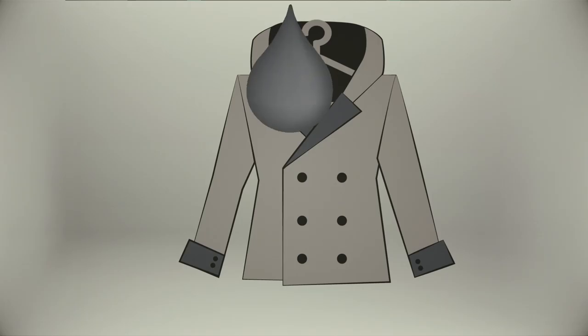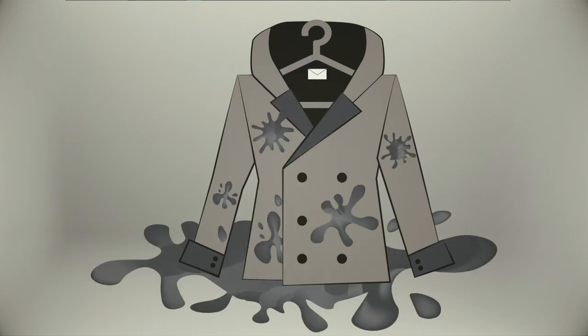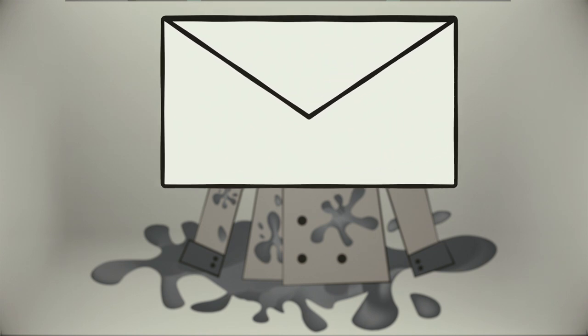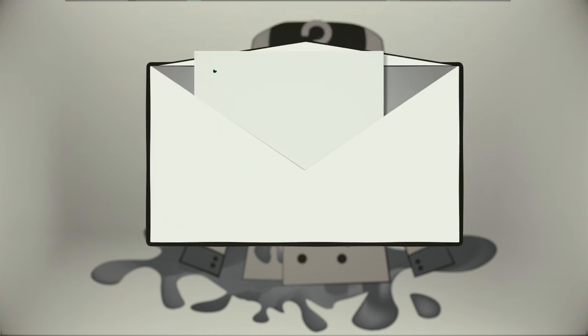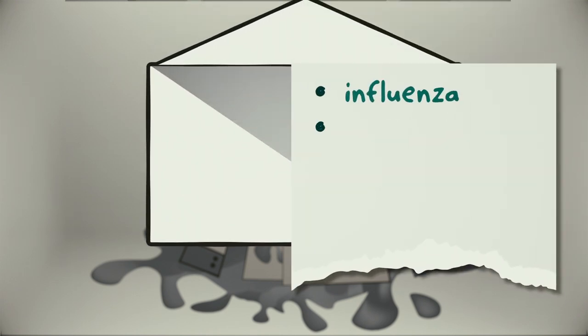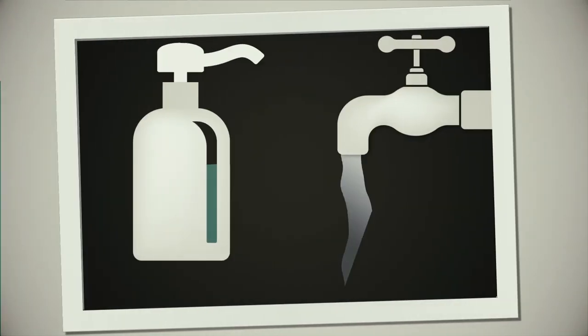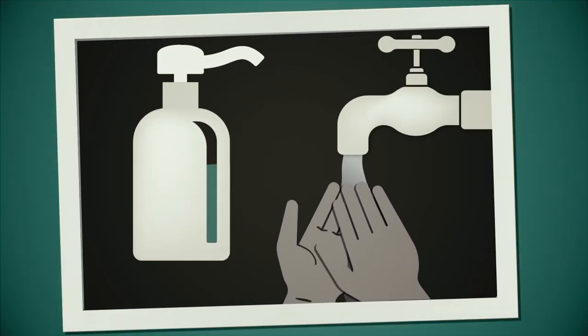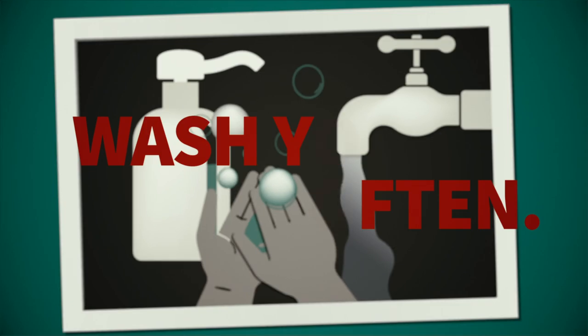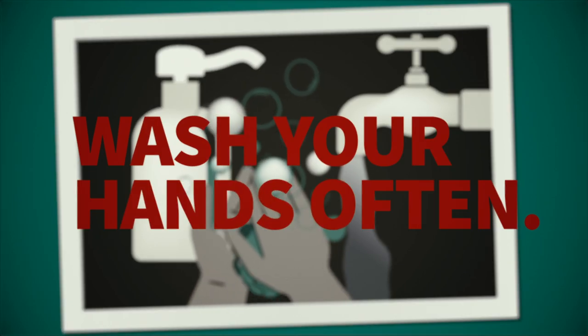Some viruses also wear greasy overcoats, called envelopes. They're made from stolen shards of the outer membranes of the last cell they infected. Influenza, hepatitis C, herpes viruses, HIV, and coronaviruses all have envelopes. These greasy overcoats break down in soap, which is why you should wash your hands often.